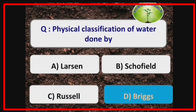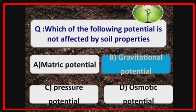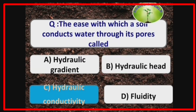Physical classification of water is done by Briggs. Gravitational potential is not affected by soil properties. The ease with which a soil conducts water through its pores is called hydraulic conductivity.